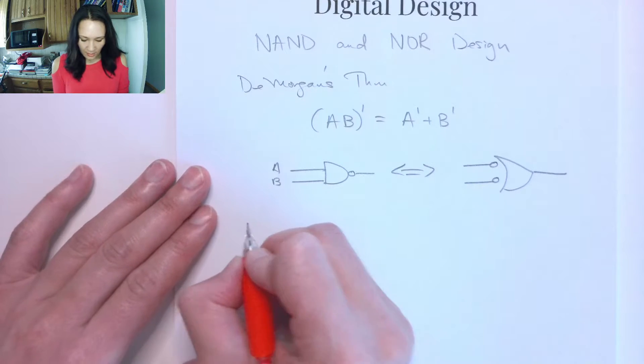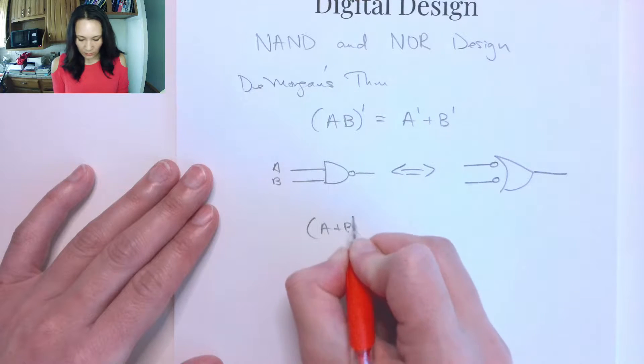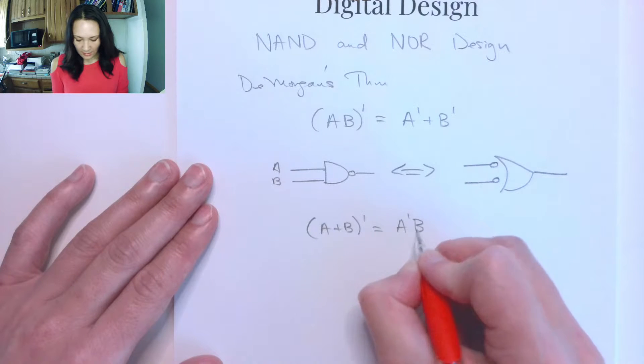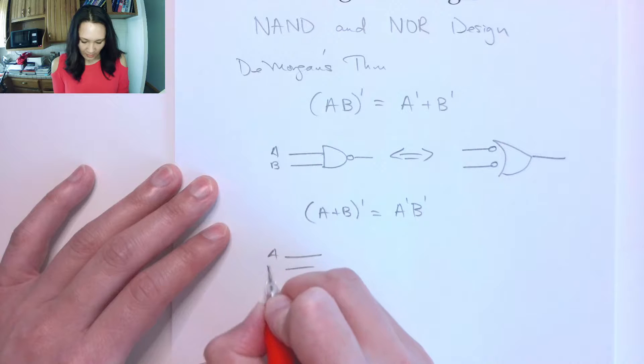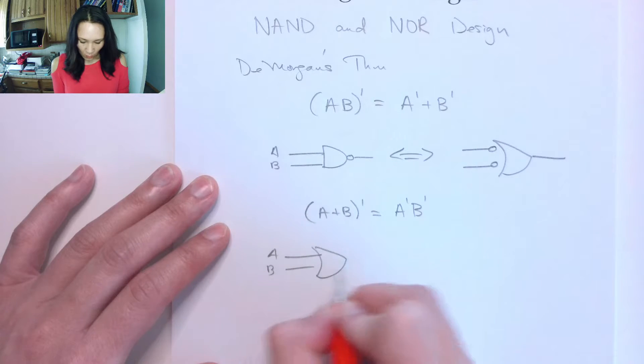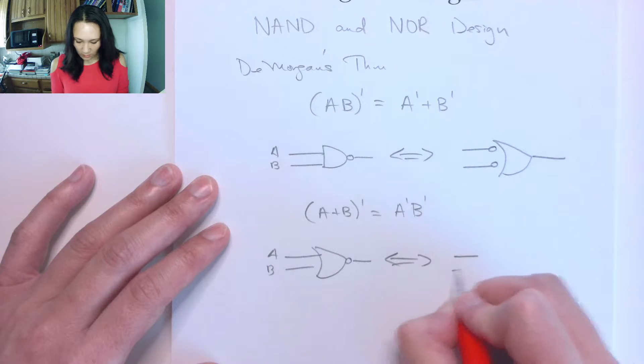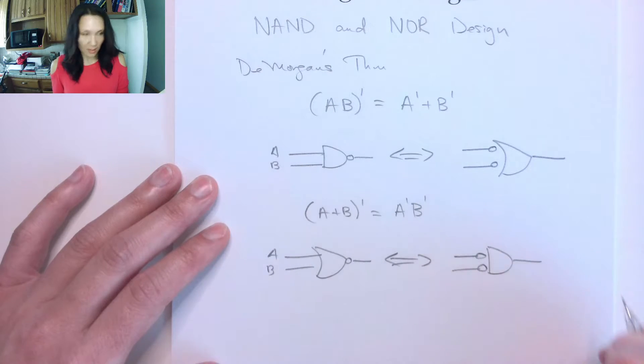And then the other case for De Morgan's theorem is if we have two inputs ORed together and then inverted, this can be replaced with A NOT AND B NOT. So if we have A B coming in, ORed, and then NOTed, then we can replace this with A and B NOTed and then ANDed.